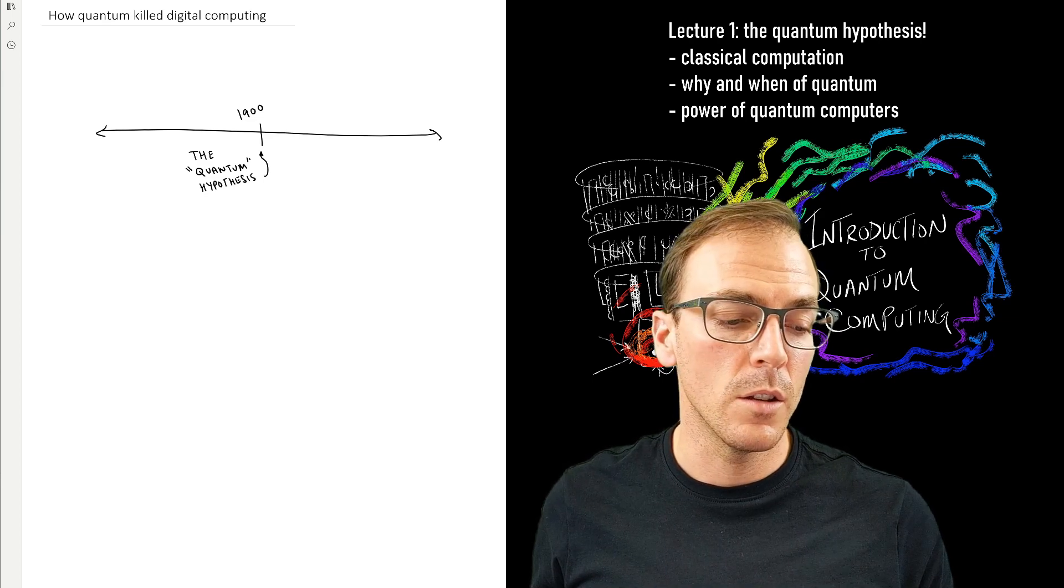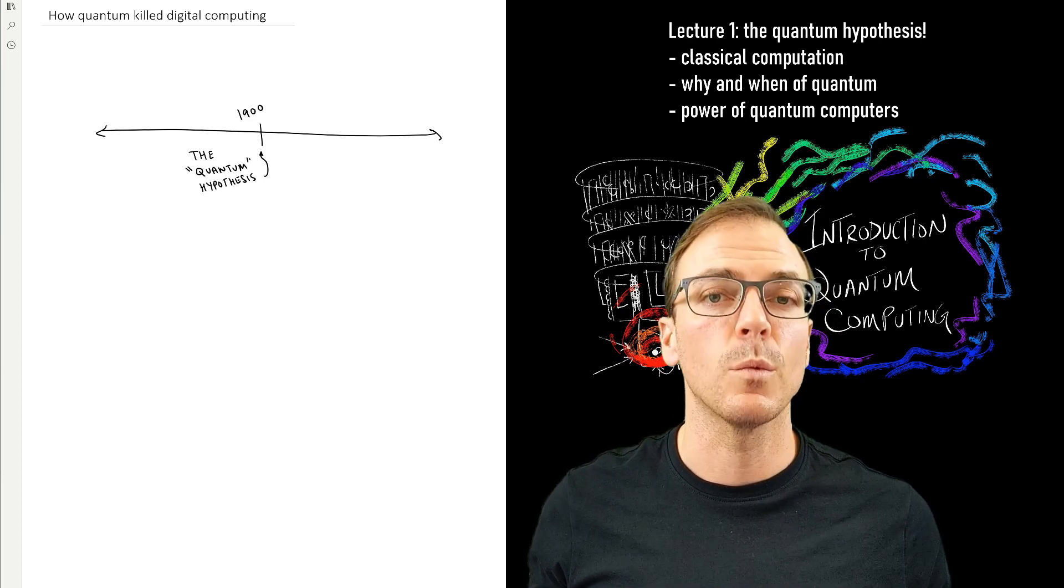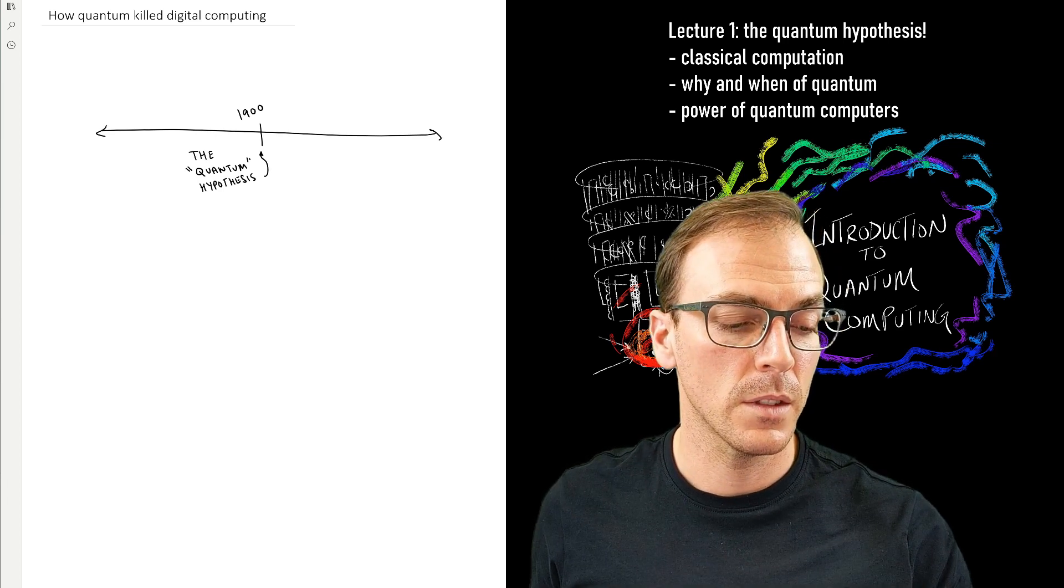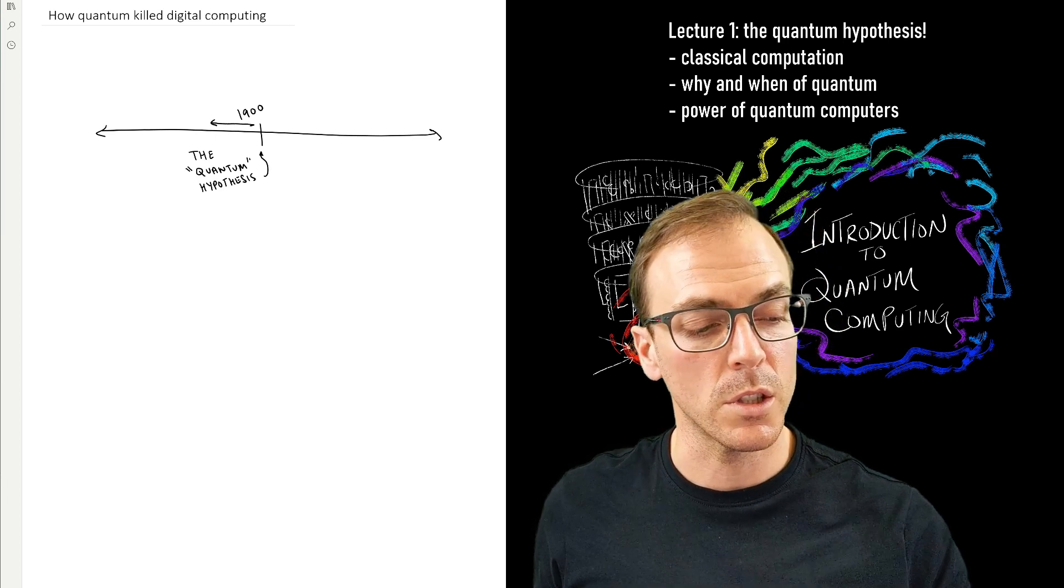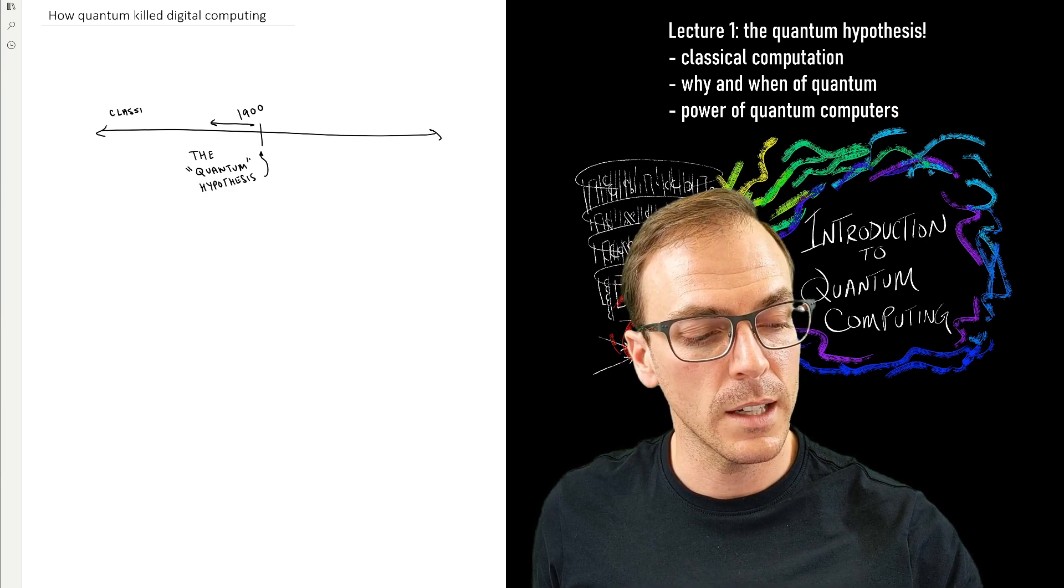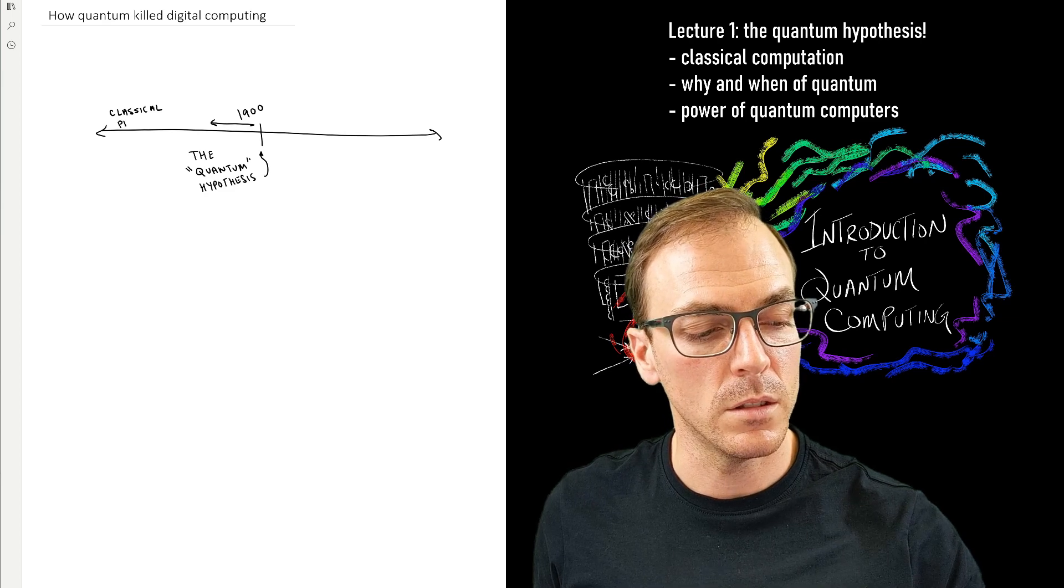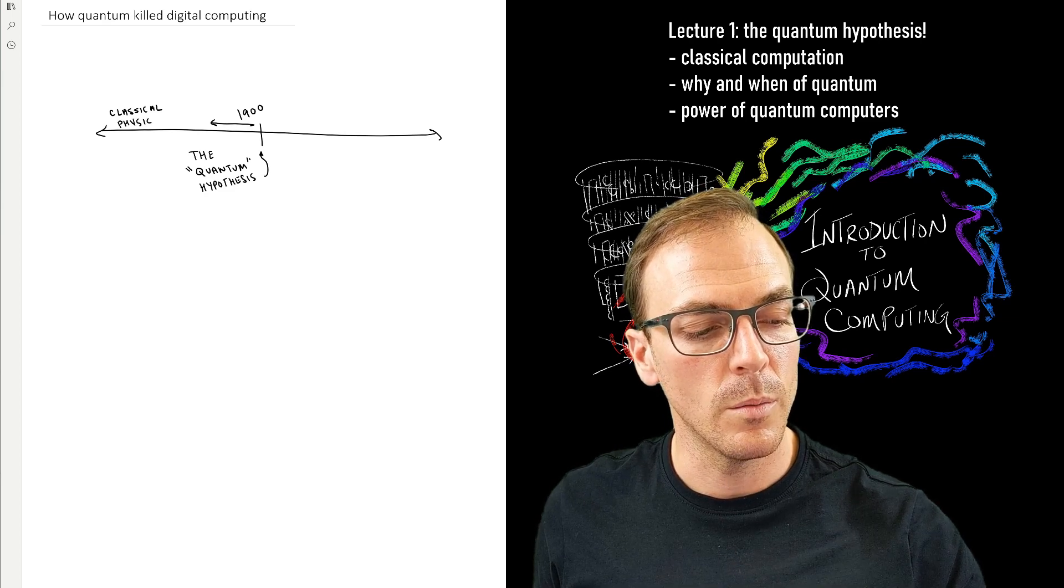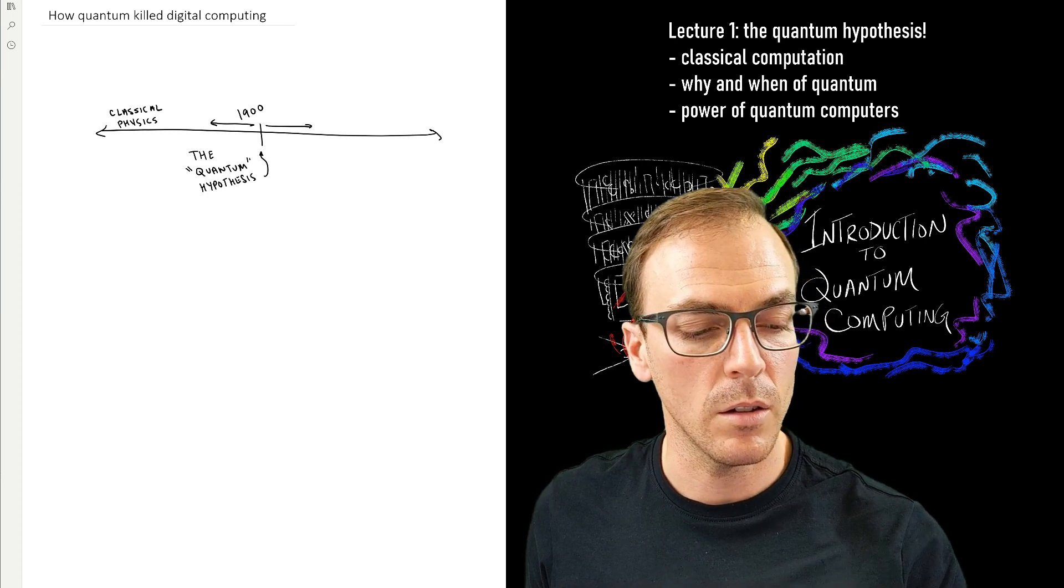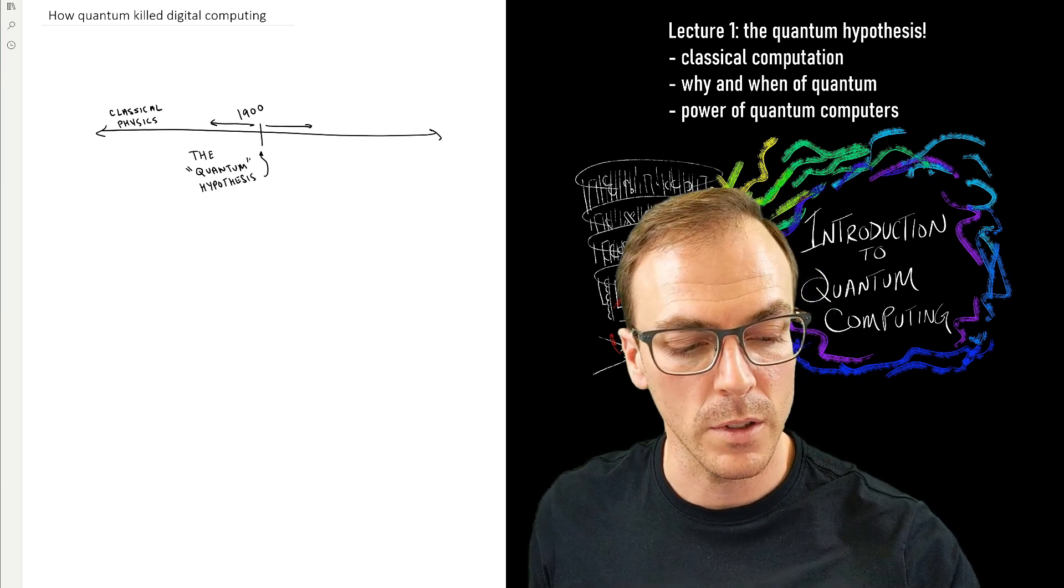And they used a new kind of physics, which eventually became called quantum physics, to explain this data. So prior to 1900, of course, it was just called physics. But after quantum mechanics, the physics of Newton became known as classical physics, and all the stuff that came after would be modern physics.